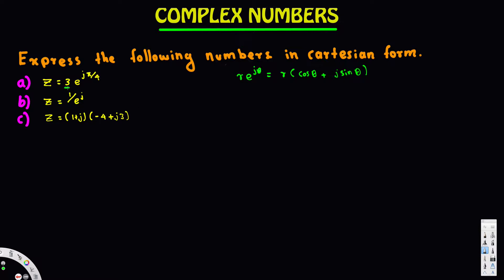So we are going to do part a. In part a, r is equal to 3 and the angle is 5π/4. When we write this in the pattern r·(cosθ + j·sinθ), we are going to have 3·cos(5π/4) + j·sin(5π/4).